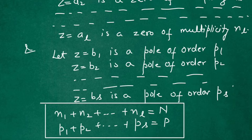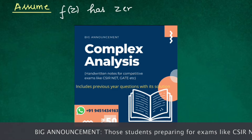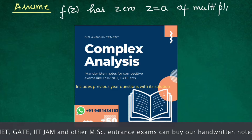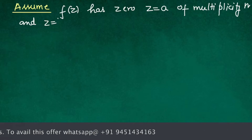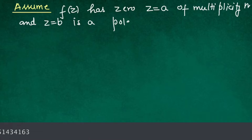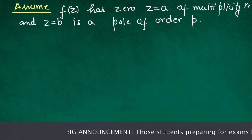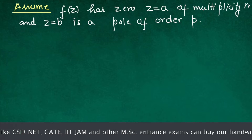To prove this theorem, we will first prove it by taking a particular case, and after that we will generalize the statement. So first, assume that f(z) has only one zero and only one pole: z = a of multiplicity n, and z = b is a pole of order p.